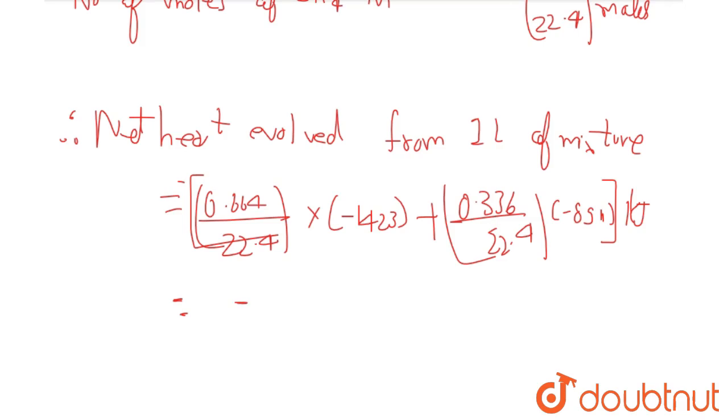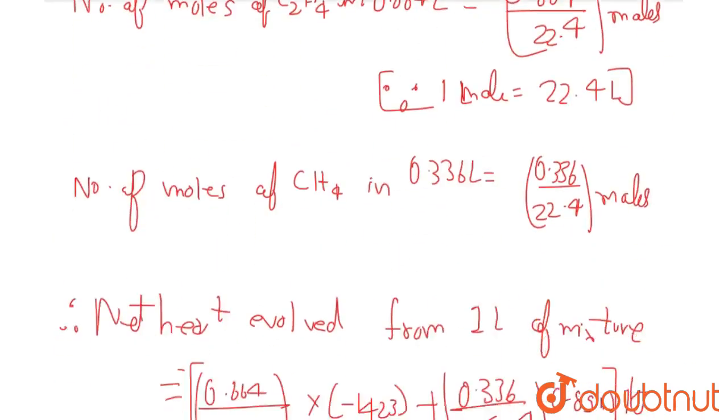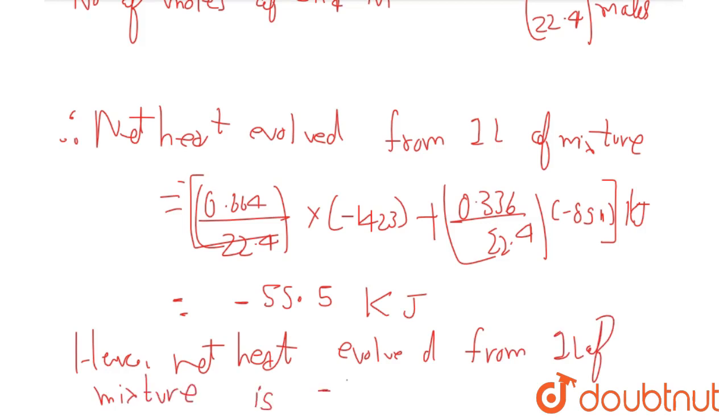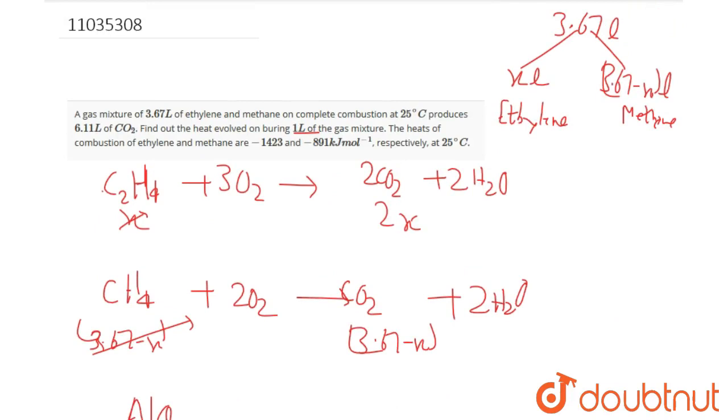On further calculation, we get minus 55.5 kilojoules. Hence, the net heat evolved from 1 liter of mixture, as per the conditions given, is minus 55.5 kilojoules. This is the final solution.